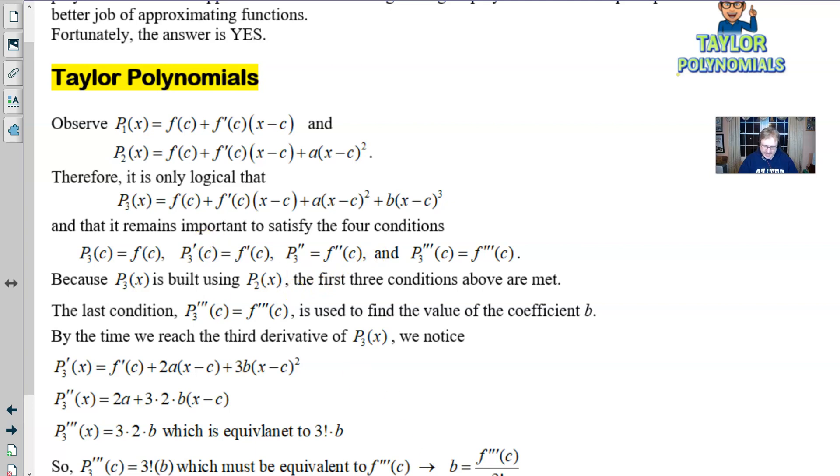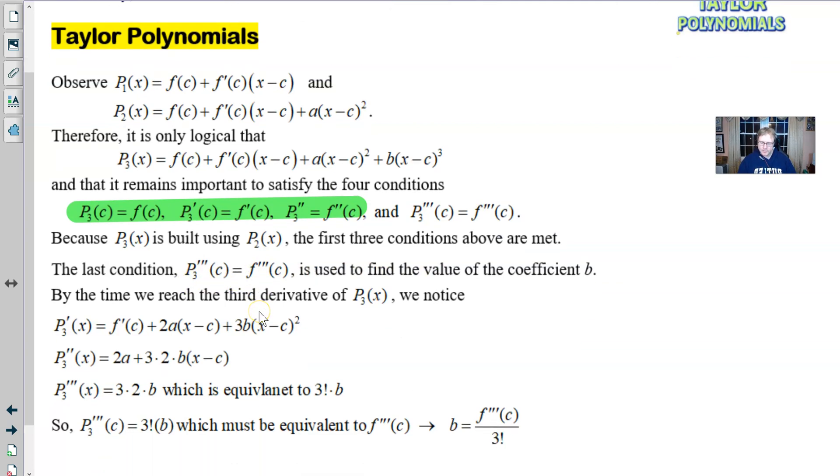The third polynomial has to match the function. The first derivative of the third polynomial has to match the function's first derivative. Second derivatives have to match. Third derivatives have to match. Otherwise, we can't really use it as a fairly reliable model. So because P3 is built using P2, it turns out that these three conditions are already met. Now, the reason being is that we've already shown those are met for P2.